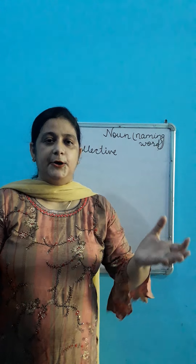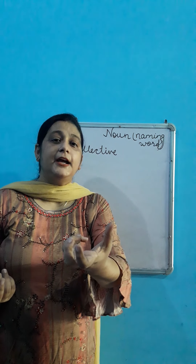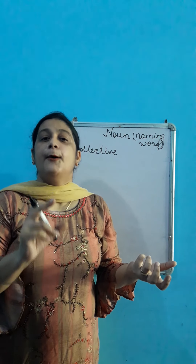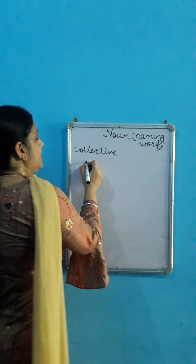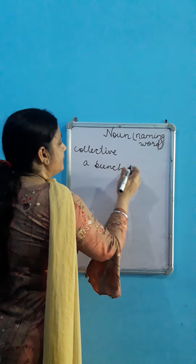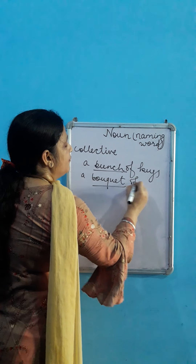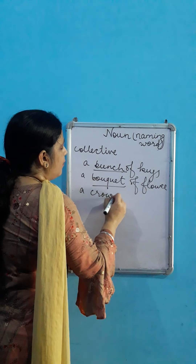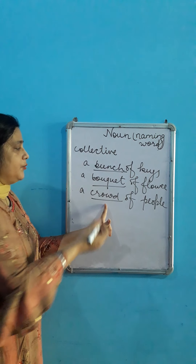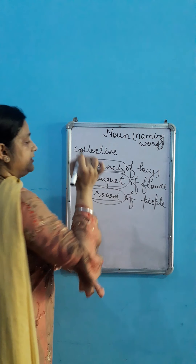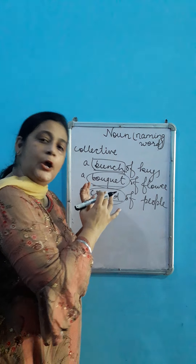Now you are students. Aap class mein baithe ho — toh students ki group ko kya kehte hain? Class. Agar aap flowers hain, flowers ke group ko kya kehte hain? Bouquet — a bouquet of flowers. Ab keys hain — keys ke group ko hum kya kehte hain? Bunch — a bunch of keys. A crowd of people. Toh ye jo hain — bunch, bouquet, crowd — yye saare kya hain? These are called collective noun, kyonki ye group ko refer karte hain.